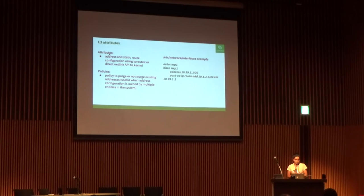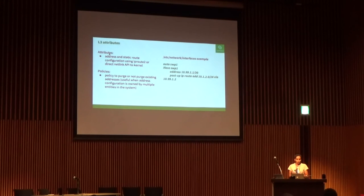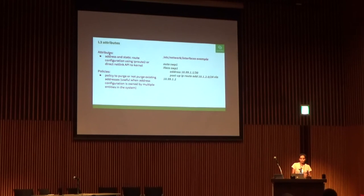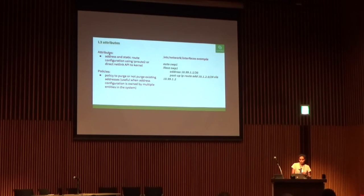For L3 attributes, we use IPRoute2 or direct Netlink API to the kernel. We usually use IPRoute2 because it's the fastest way to add new features. But over the years, due to some Python performance problems, we developed a Netlink library in Python which we now use.